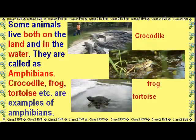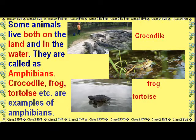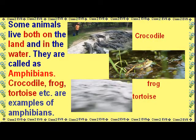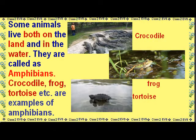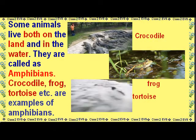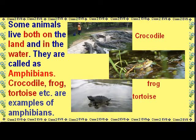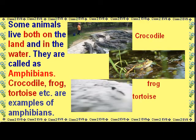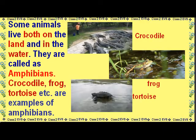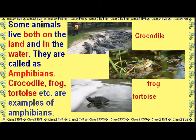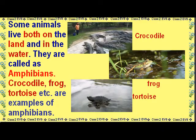Some animals live both on land and in water. They are called amphibians. Crocodile, frog, tortoise, etc. are examples of amphibians.